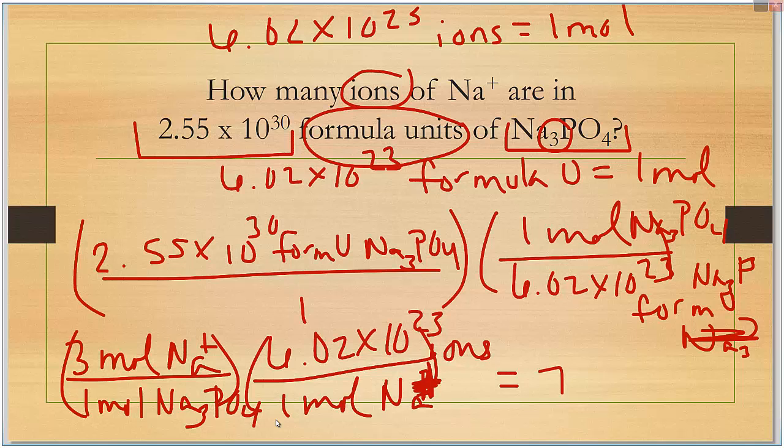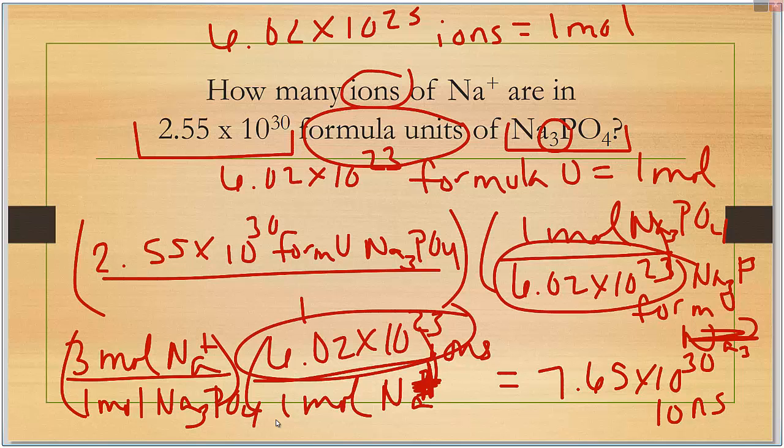You may have noticed that with this one, 6.02 is on the bottom and 6.02 is on the top. Those cancel out. You could have gone directly from formula units to ions by saying that there's 3 ions in each formula unit. I went this way just so that way you stay in the habit of going to moles first. Either way will give you the correct answer. And that is how you break apart chemical formulas.